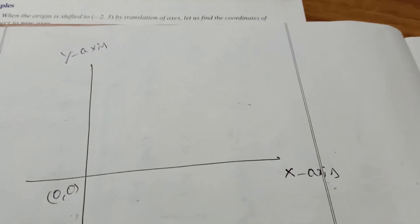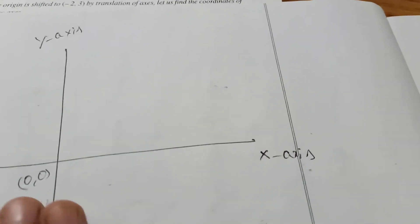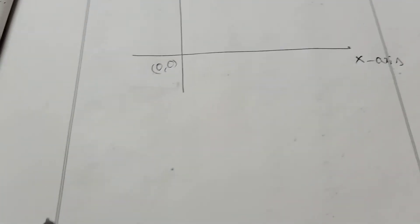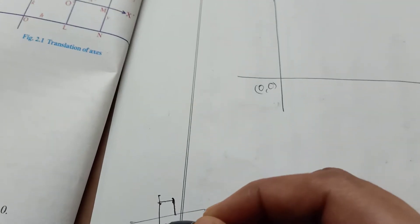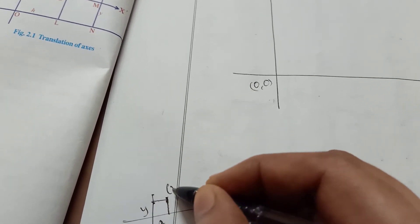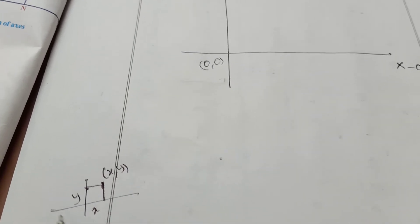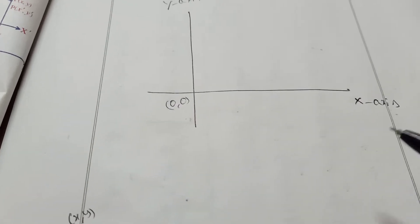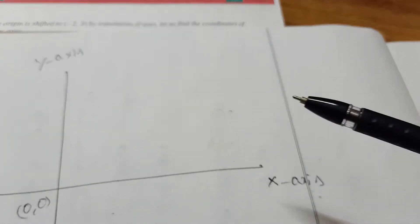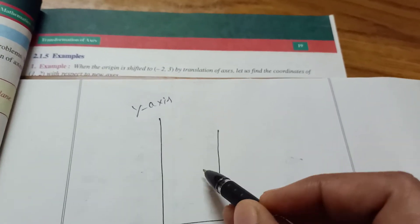Transformation of axes means we transform this axis. Here old coordinates use small x and small y. Suppose you take a point — that point will be x comma y, small x small y. Those are the original coordinates. When we change them, they are transformed into another axis called capital X capital Y. That is the transformed axis.